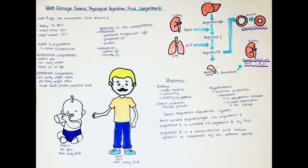So we can see that the renin-angiotensin-aldosterone system really works to increase blood pressure and blood volume. The water balance is complex and regulated by many organs — we mentioned the kidneys, the liver, the hypothalamus, and the adrenal glands. There are of course more mechanisms, but that gives us a general idea. That was it for part one of this video. Watch part two next, where we will discuss dehydration and fluid replacement therapy. Thank you for watching.